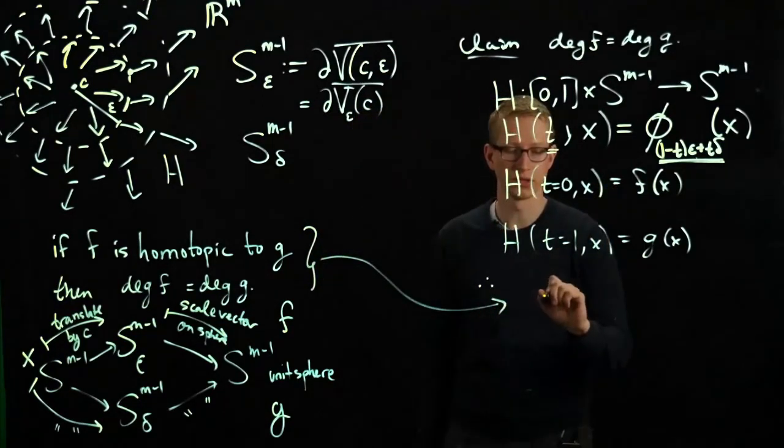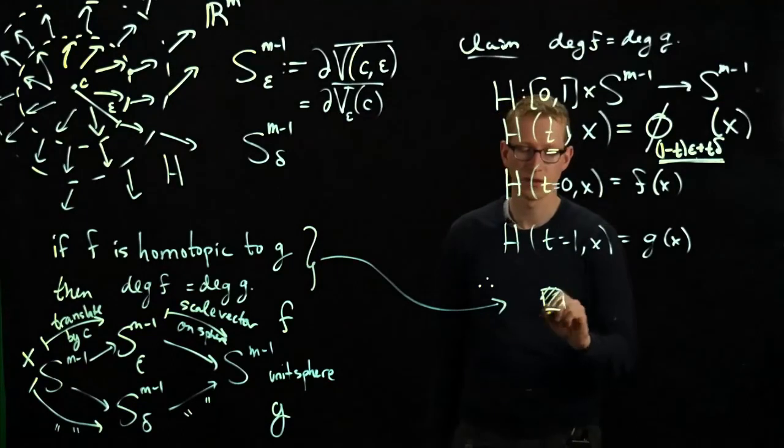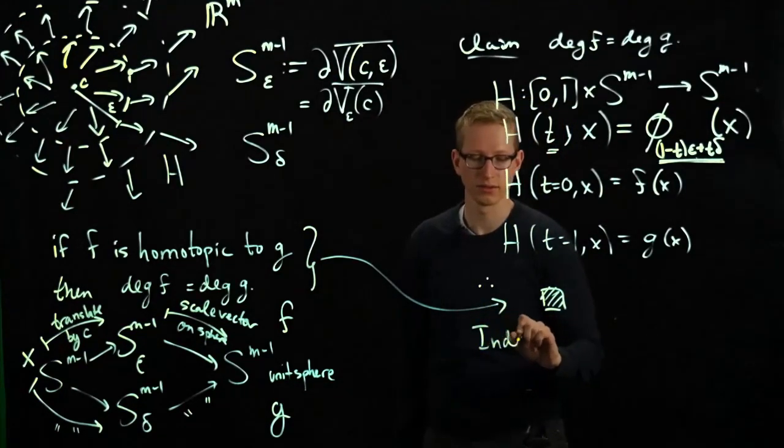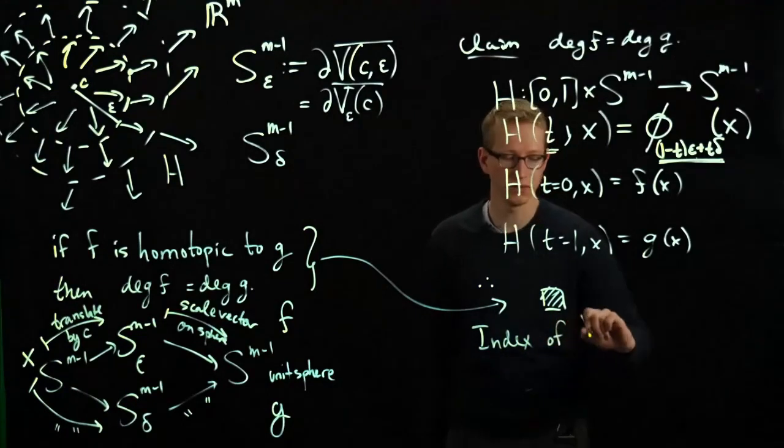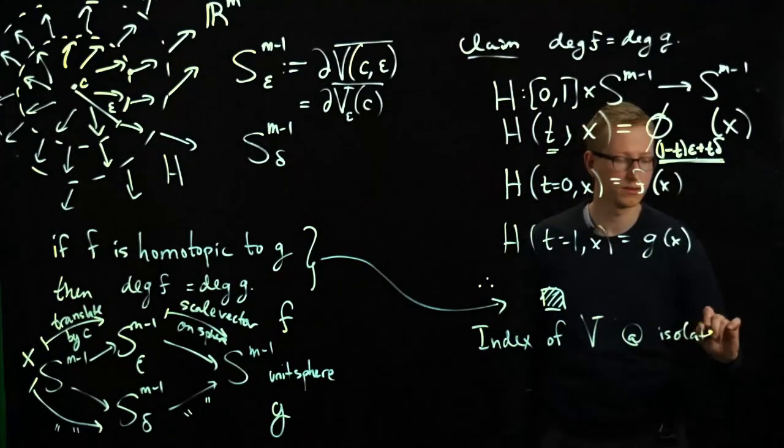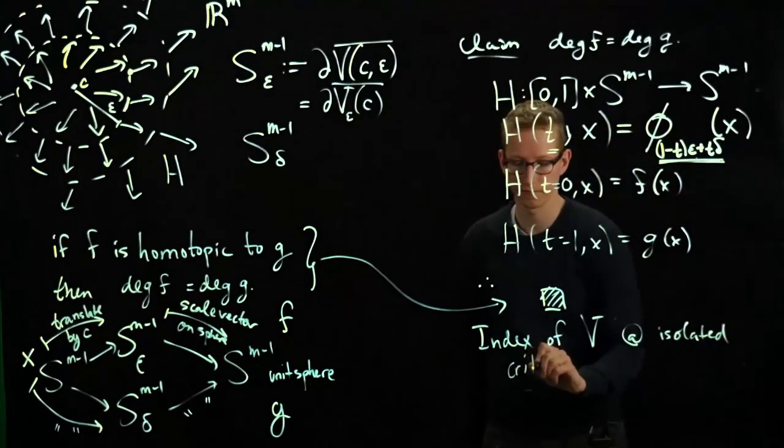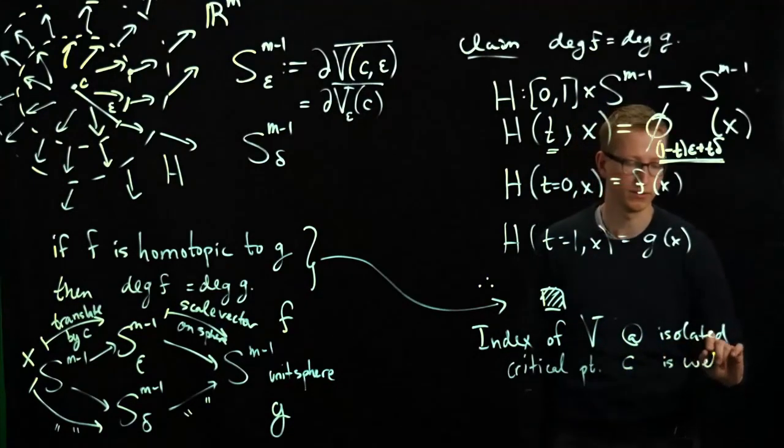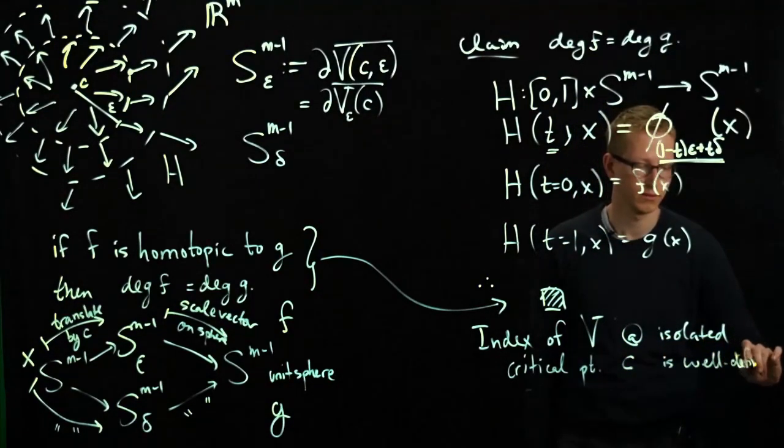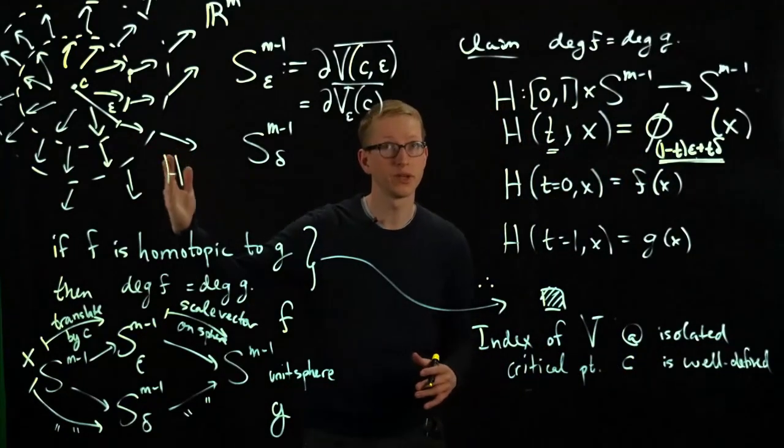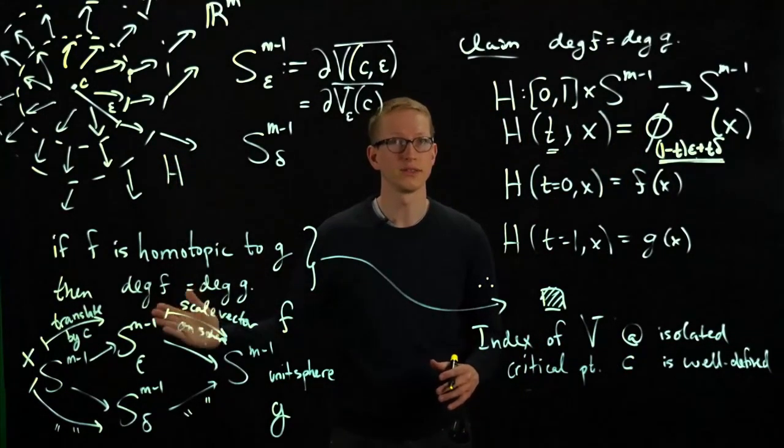So this tells us that the index of v, a vector field v, at an isolated critical point c is well-defined. And even though your functions might be different, their degrees are the same.